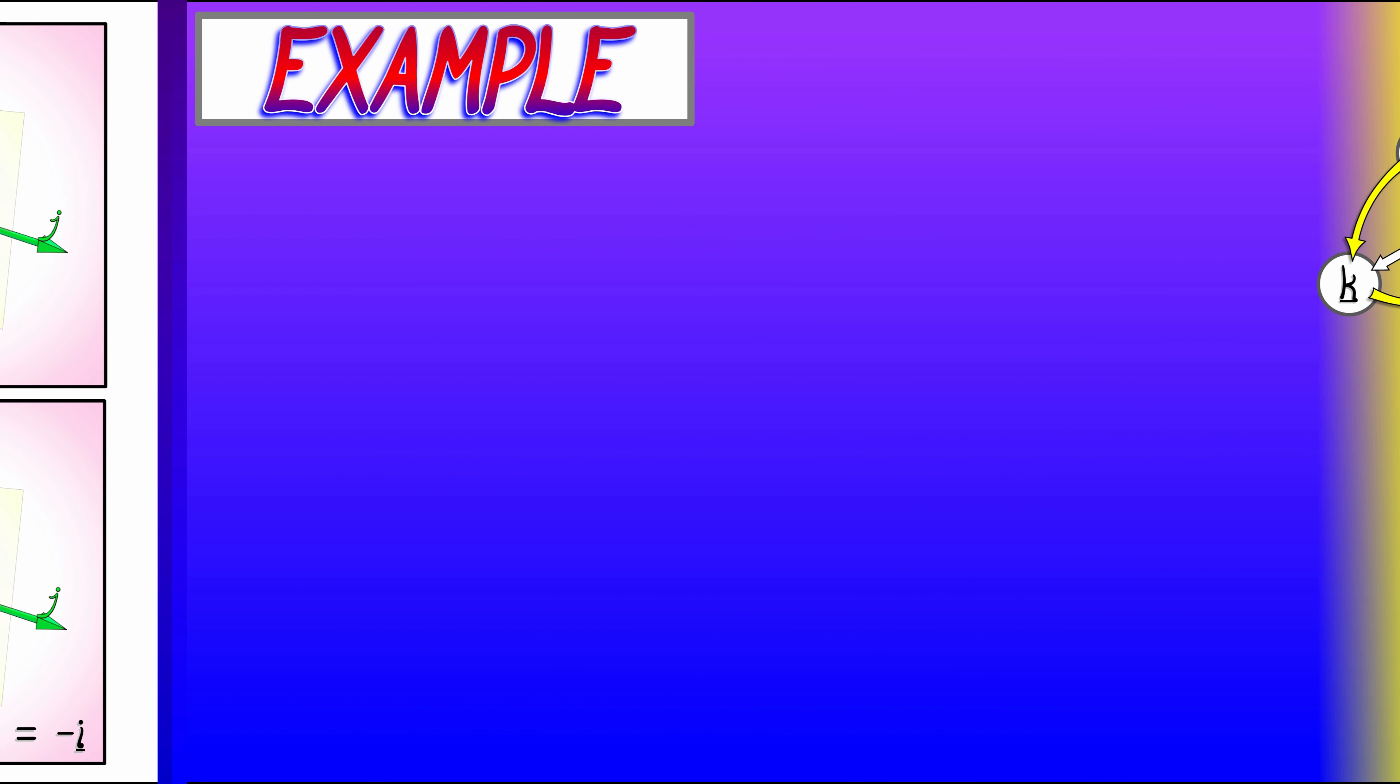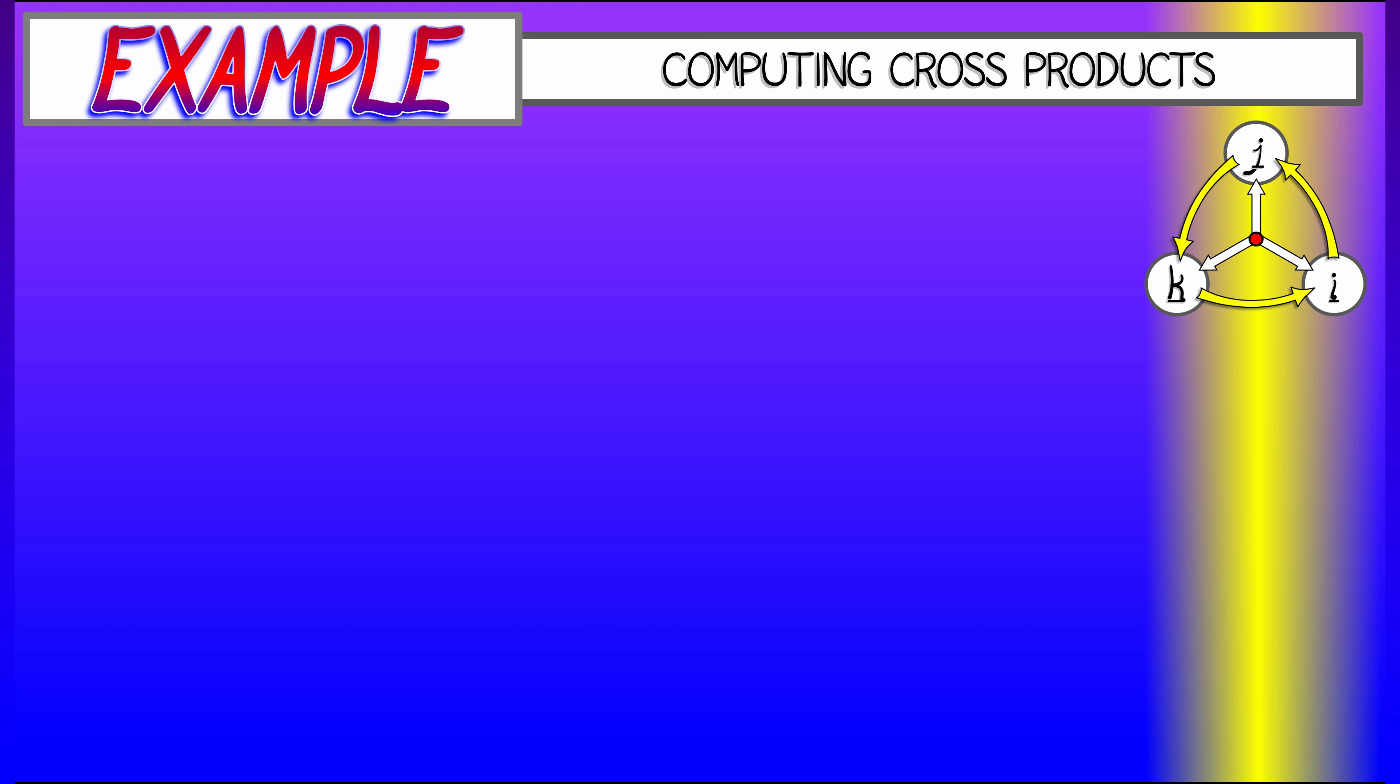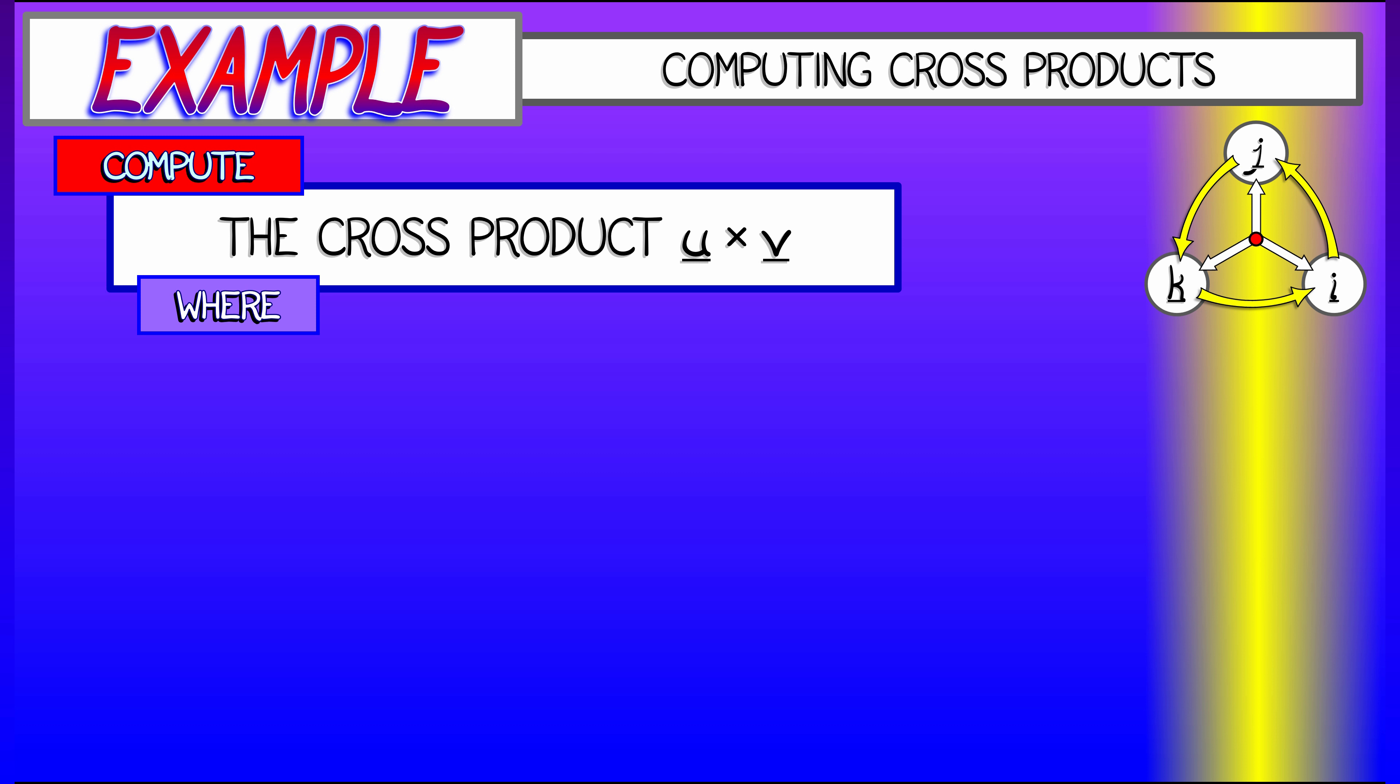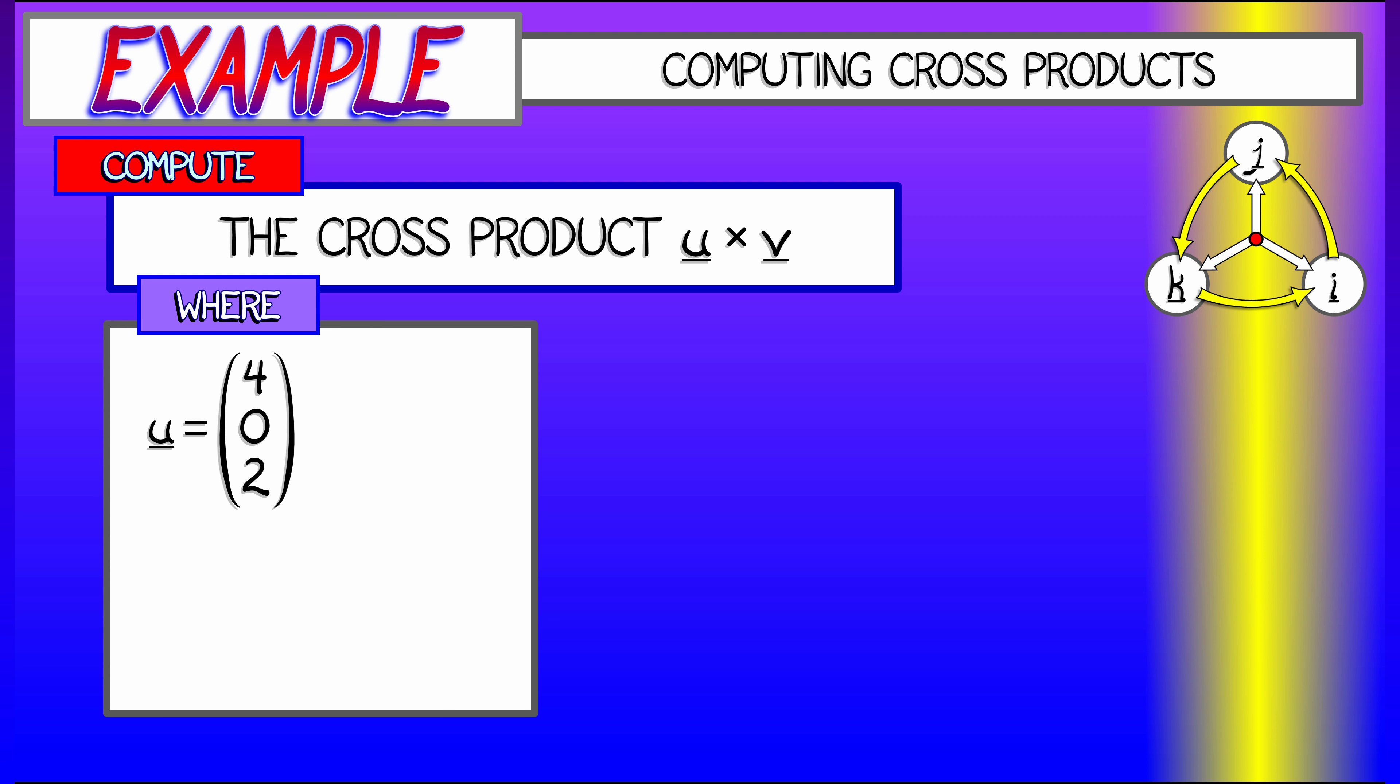This is useful even in explicit examples. Let's say I ask you to compute the cross product of u = (4, 0, 2) with v = (0, 3, -1).